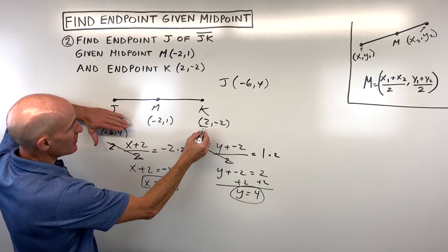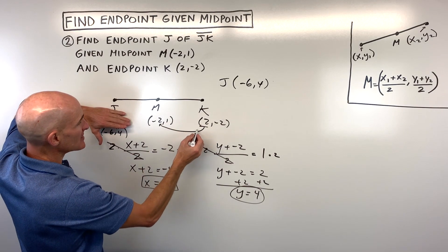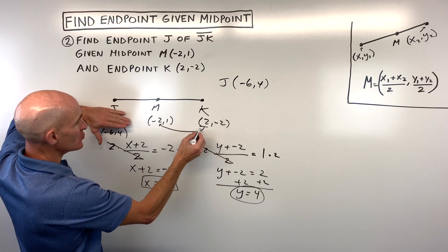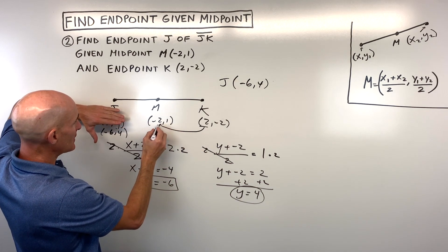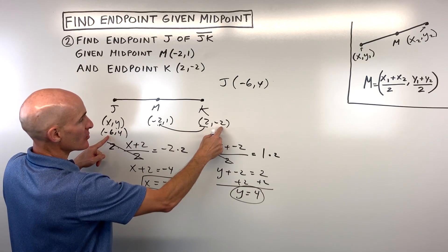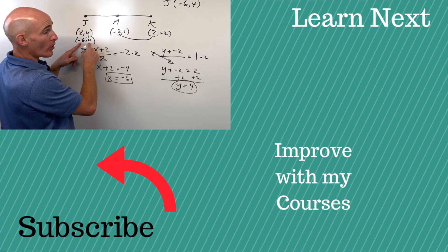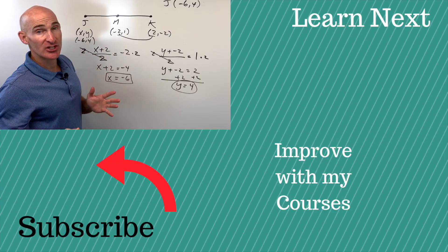Or if you want to do that shortcut method, say okay, how am I going from this X coordinate to this X coordinate? I'm subtracting four. So two minus four is negative two. And then negative two minus four again gives us negative six. Same thing here, negative two plus three is one, one plus three is four. And that's a quick shortcut way to check your work.